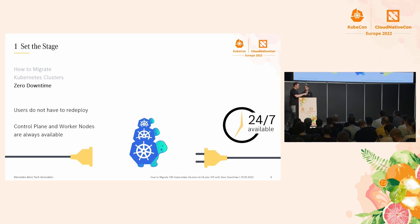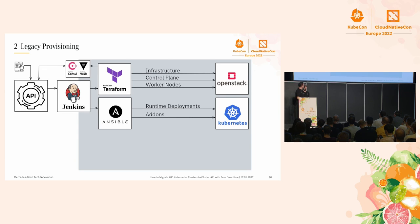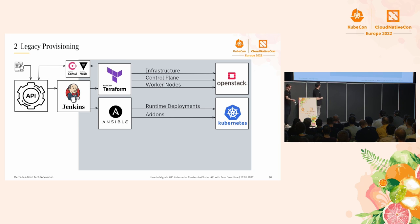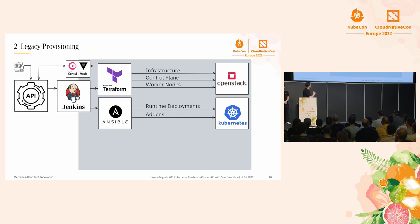This is the picture of our legacy cluster provisioning architecture. We have a custom user interface where users can order a cluster, and a custom API that triggers several Jenkins pipelines. Those pipelines trigger Terraform pipelines for cluster provisioning — infrastructure, control plane, worker nodes, etc. Once the cluster is provisioned, we use Ansible to deploy runtime deployments — Kubernetes core deployments like CNI, CSI, and so on — and then cluster add-ons like metrics exporters or custom controllers.